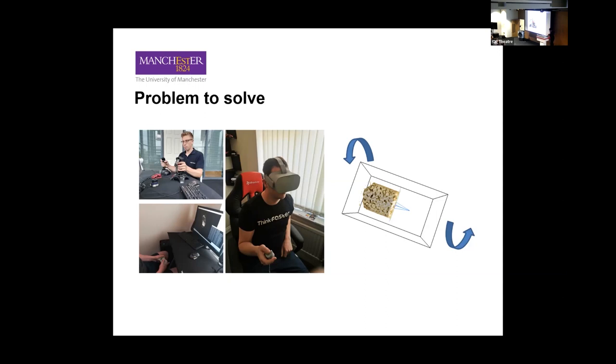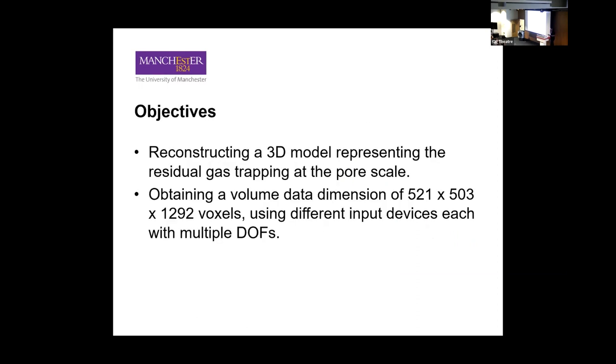Having said that, we consider a specific example from the science exploring interactive visualization of computer tomography 3D volumes. We use micro CT images that were selected into solid water and gas phases, and these images were obtained from the British Geological Survey database. We reconstructed a 3D model that represents the residual gas trapping in porous rocks at the core scale. And then we explore and realize the efficiency of a user to obtain a specific clipping volume using different input devices, each with multiple degrees of freedom. The goal of this experiment is to obtain a volume that you can see on the screen, which has those dimensions in voxels, using different input devices, each with multiple degrees of freedom.